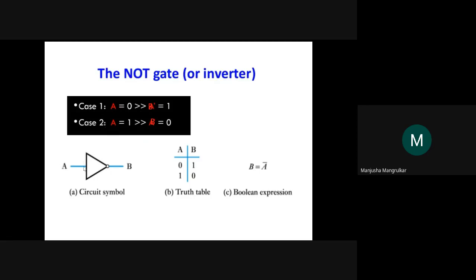If input is one, output will be zero — that is the complement, like a one's complement. The truth table has one input and one output. The Boolean expression is: B equals A complement. Suppose A equals zero, output is one; if A equals one, output is zero.